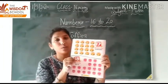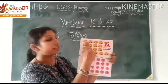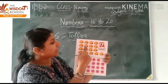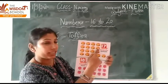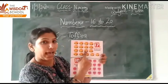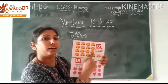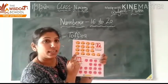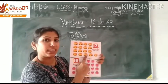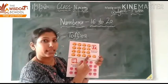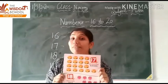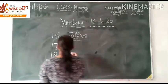17 burgers. Okay, let us count. 1 2 3 4 5 6 7 8 9 10 11 12 13 14 15 16 17. How many burgers? 17 burgers.